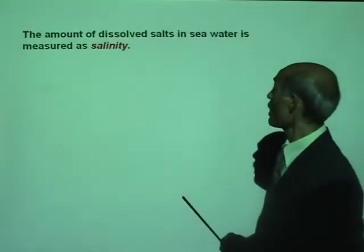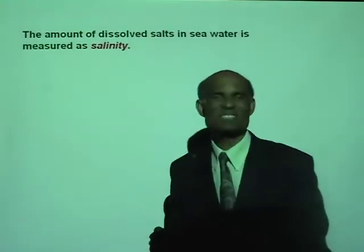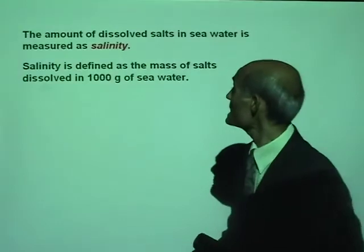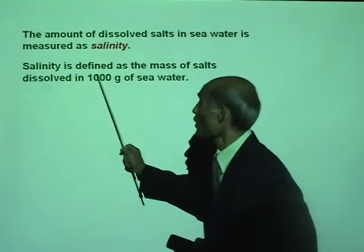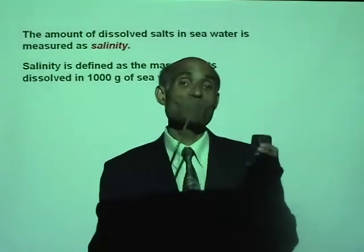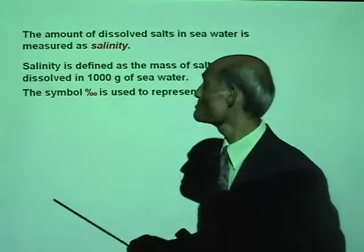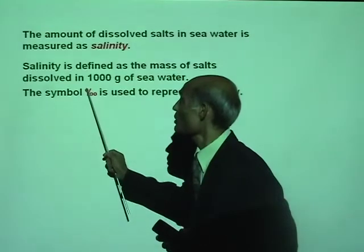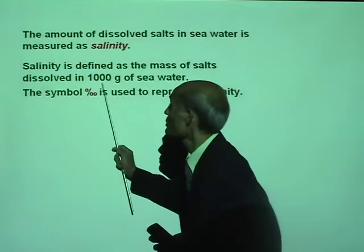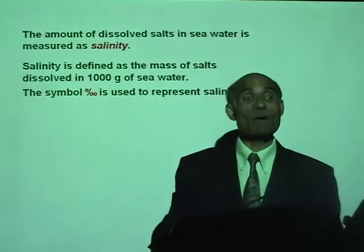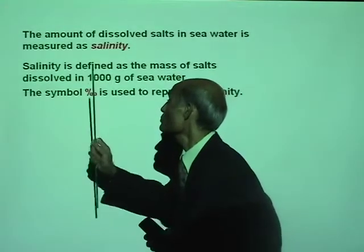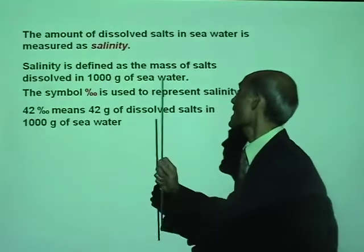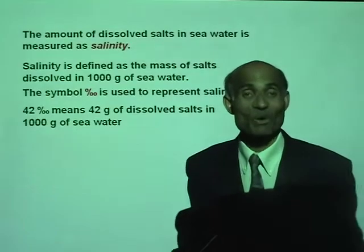The amount of dissolved salts in seawater is measured as the salinity — a measure of dissolved minerals in seawater. Salinity is defined as the mass of salt dissolved in 1,000 grams of seawater, expressed in parts per thousand (‰). For example, 42‰ means 42 grams of dissolved salt in 1,000 grams of seawater.